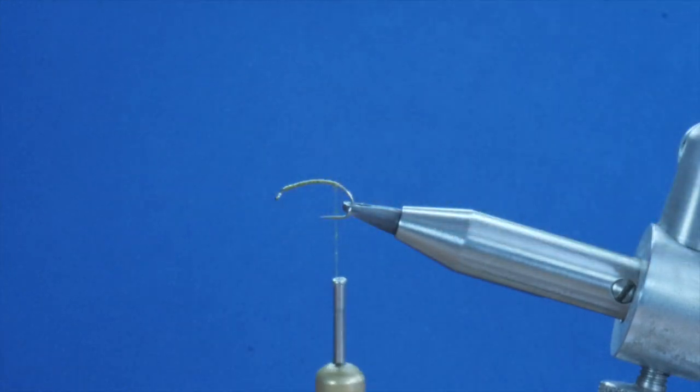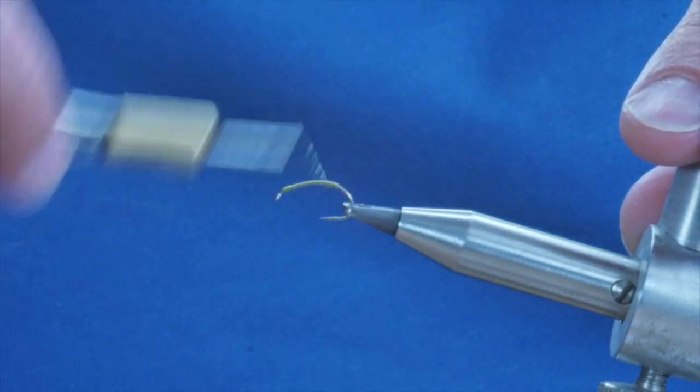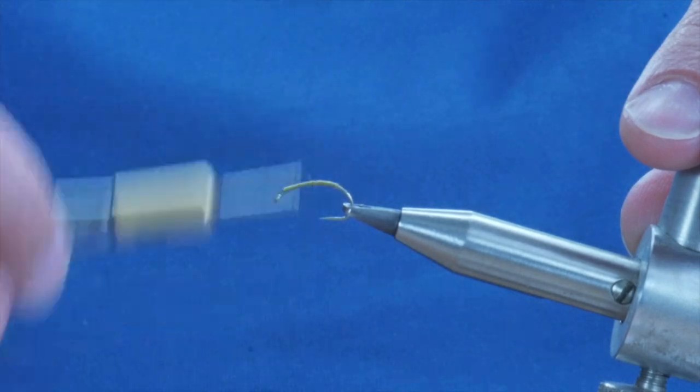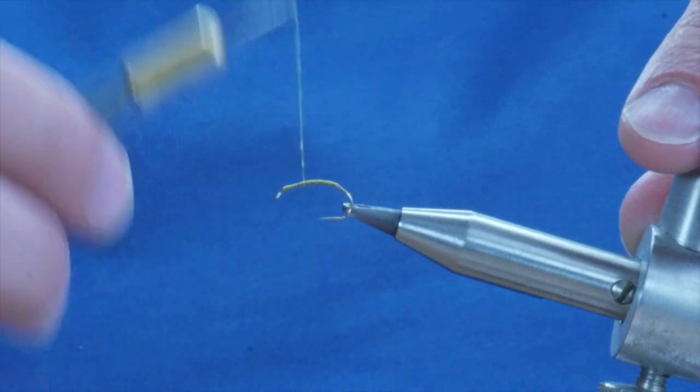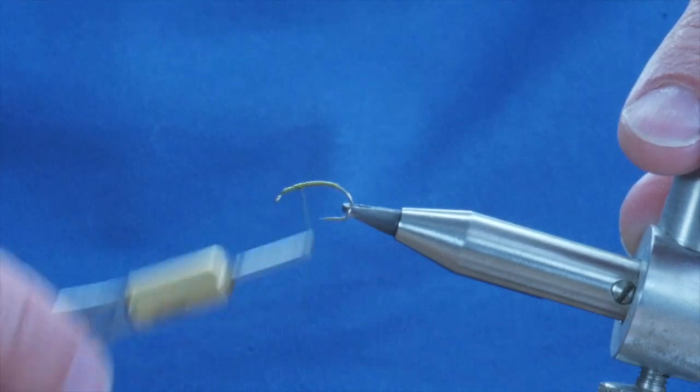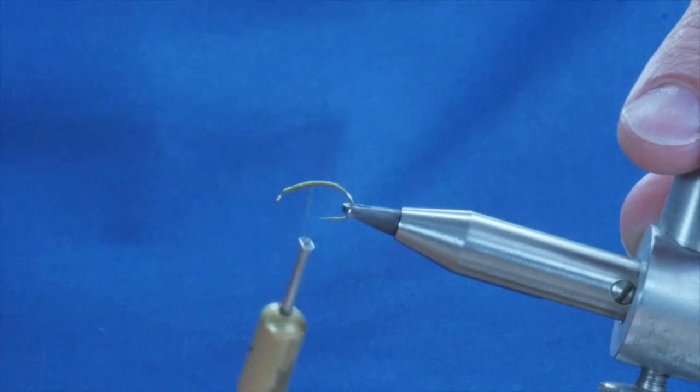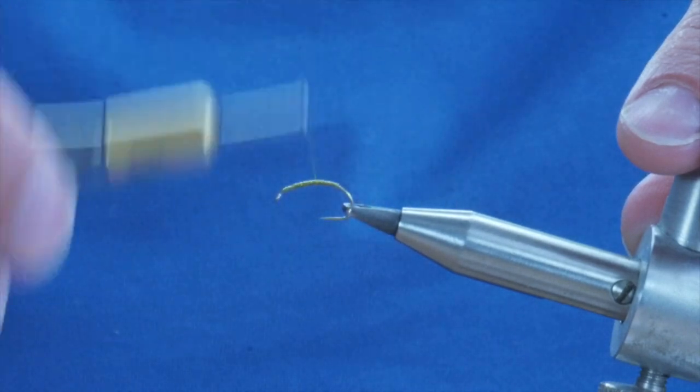I'll just remove my vise now. And what I want to do with this is just build up a nice olive body. I think this stuff was originally designed for Perigon nymphs, but I've used it for all manner of different things over the years.